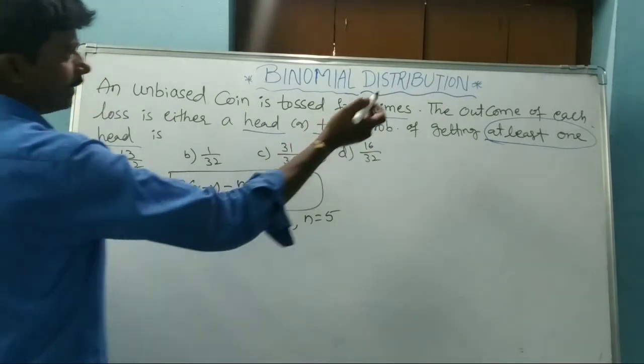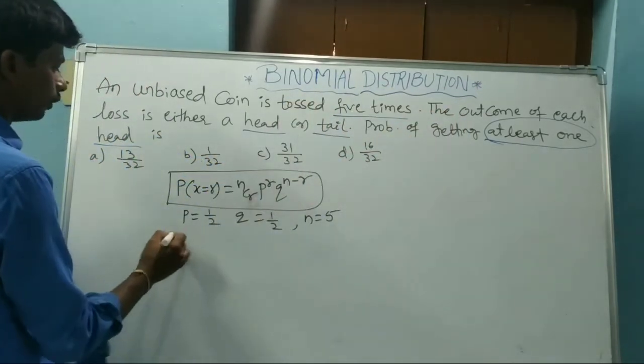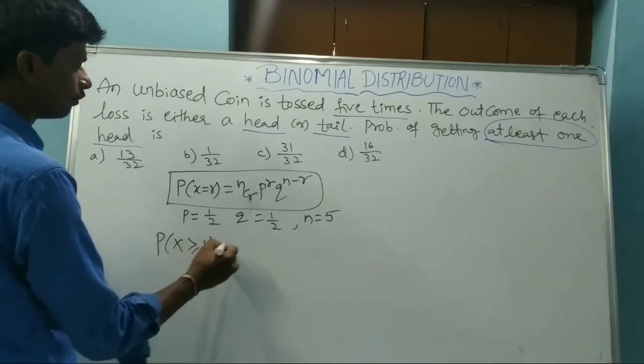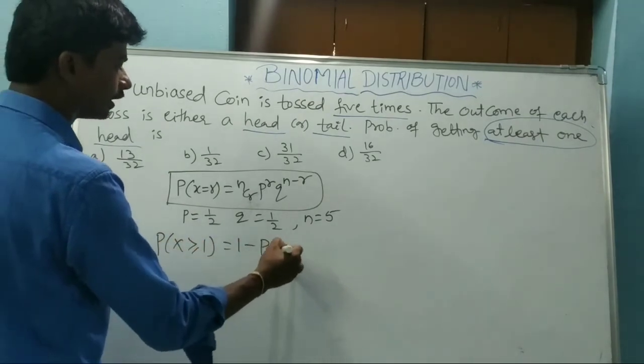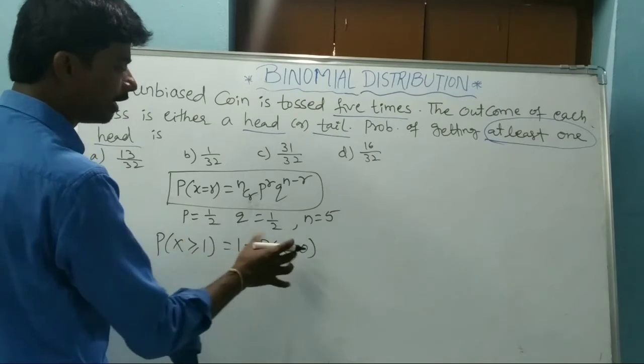Now it is one head. Probability of X greater than or equal to one, that is one minus probability of X equal to zero. This is a simple way.